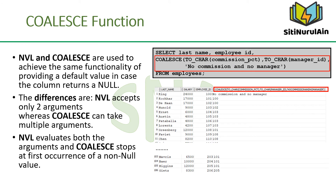NVL and COALESCE are used to achieve the same functionality of providing a default value in case the column returns a null. The differences are: NVL accepts only two arguments whereas COALESCE can take multiple arguments, and NVL evaluates both arguments while COALESCE stops at the first occurrence of a non-null value. In the example in the slide, if MANAGER_ID is not null, it is displayed. If MANAGER_ID is null, then COMMISSION_PCT is displayed. If both MANAGER_ID and COMMISSION_PCT are null, then 'no commission and no manager' is displayed.